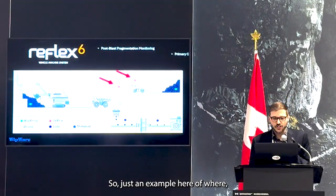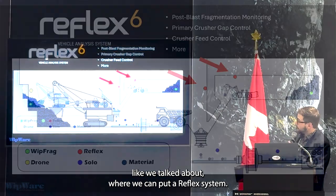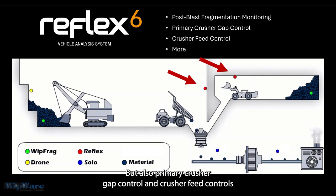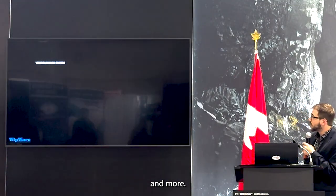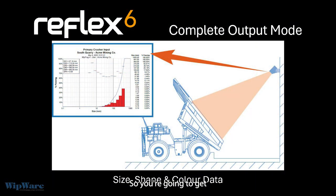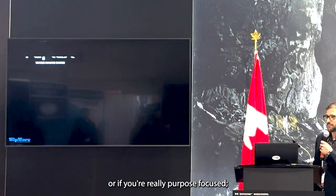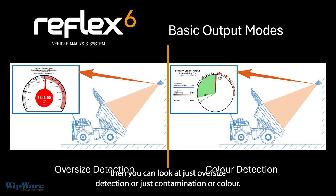Just an example of where we can put a Reflex system: post-blast fragmentation monitoring, which is what we're talking about today, but also primary crusher gap control, secondary crusher control, and more. The output gives you full particle size and shape distribution, as well as colour information if that's what you're tracking. Or if you're purpose-focused on one thing — oversize detection, or just contamination or colour — you can look at just that.